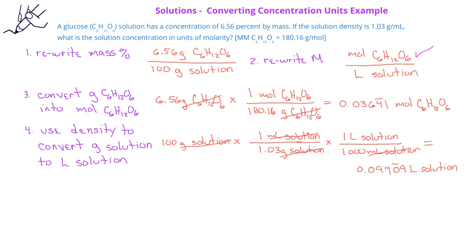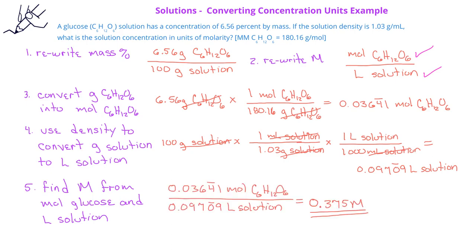Now we have both the moles of the glucose and the liters of the solution, and we can divide those to get the molarity of the solution, and we get, when we round to the correct number of significant figures, 0.375 molar solution of glucose.